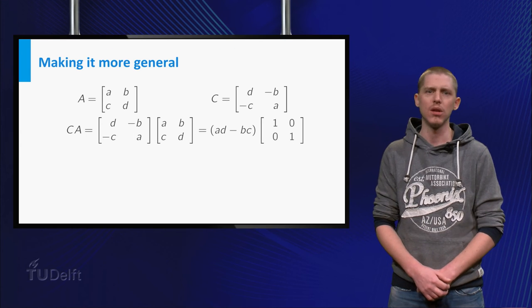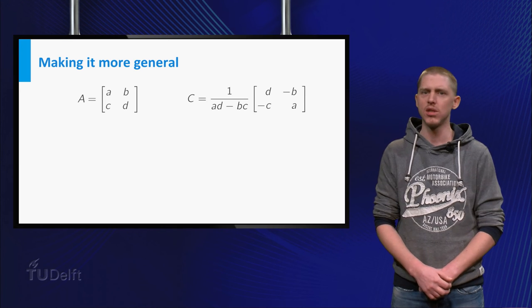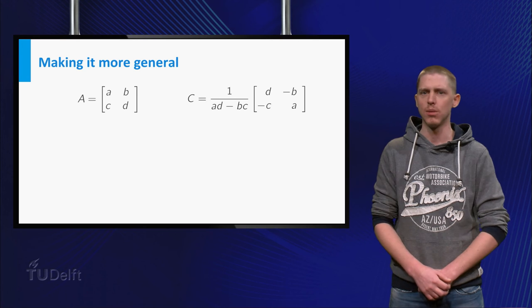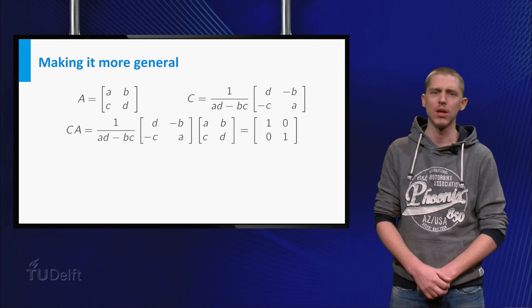So we still do not know whether A is invertible. You could, however, multiply C by the scalar 1 over ad minus bc, which will give you the identity matrix if you calculate C times A.